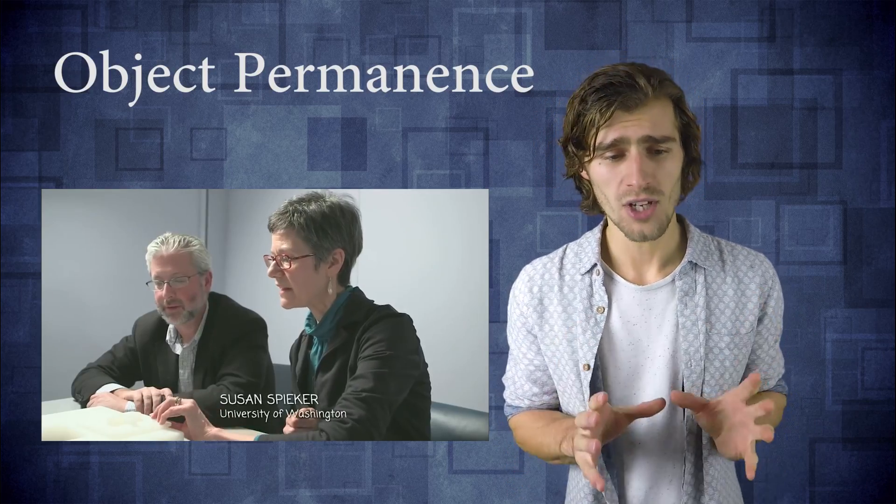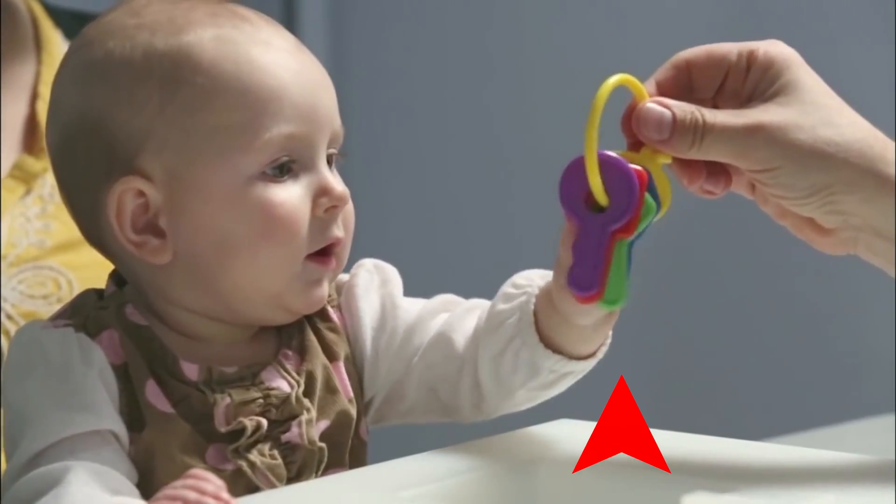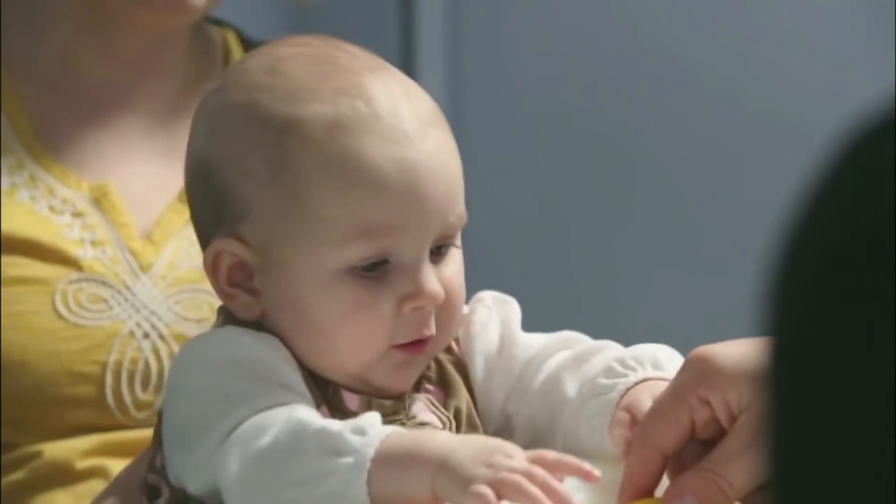Then there are also some human priors that are not really built into us genetically but that we learn at a very young age. One of these examples is object permanence. Object permanence points to the fact that if you have a given object and the object is suddenly hidden from sight, we know that that object is still there.